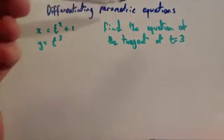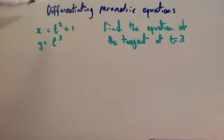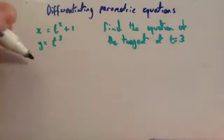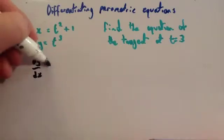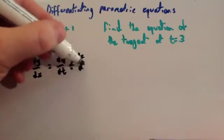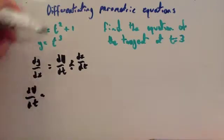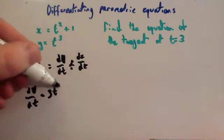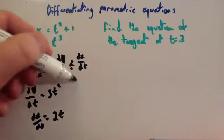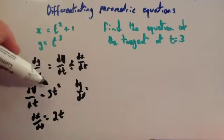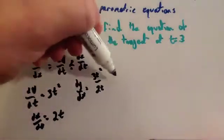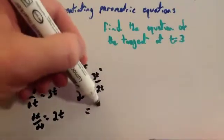In this question you've been asked to find the equation of the tangent at t equals 3, given your parametric equations. First you want to find the gradient of the tangent by finding dy/dx, which is dy/dt divided by dx/dt. Differentiating y gives dy/dt equals 3t squared, and differentiating x gives dx/dt equals 2t. So dy/dx equals 3t squared divided by 2t, which simplifies to 3t over 2.